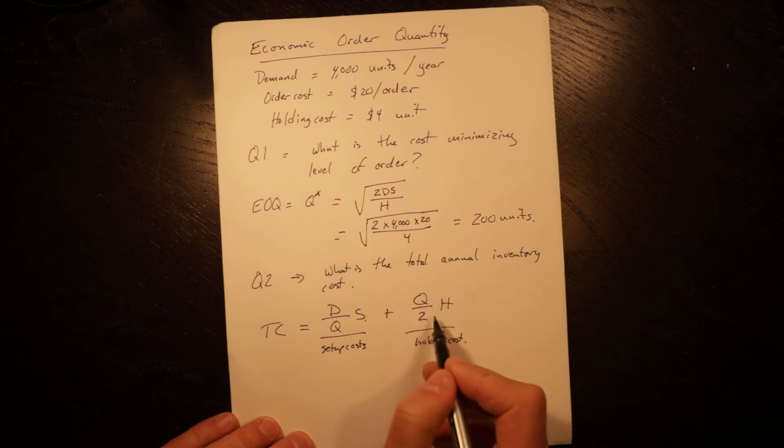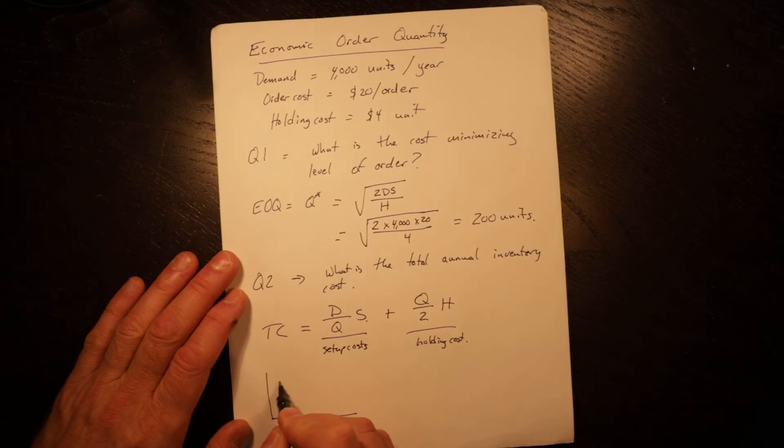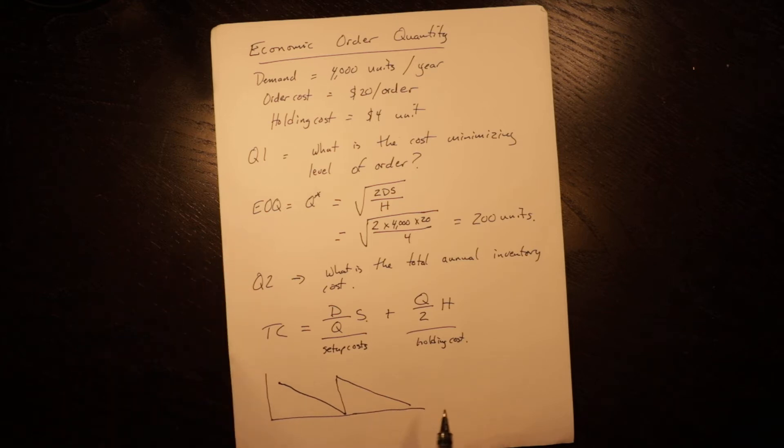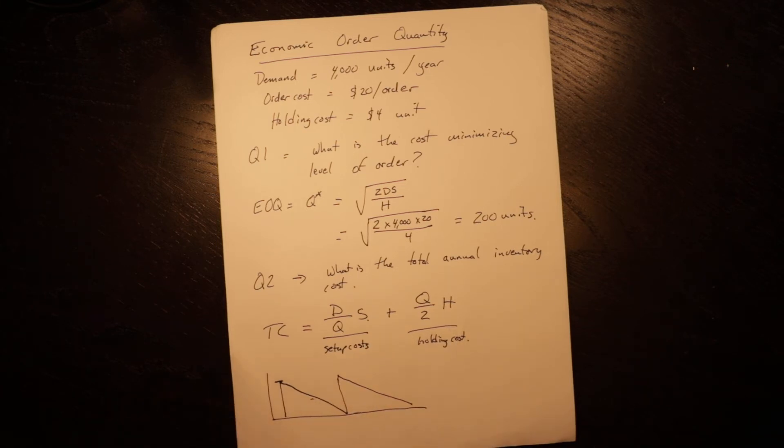Plus Q over 2 times H is the holding cost. Q over 2 is your average inventory. What happens is you get an order and your inventory goes up there and it goes down in a linear fashion. You get another order, goes up, then it goes down in a linear fashion. Because we know demand is consistent and linear, our maximum inventory is equal to Q, which goes down in a linear fashion. Q over 2 is our average inventory, which we multiply by holding costs to get annual holding costs.